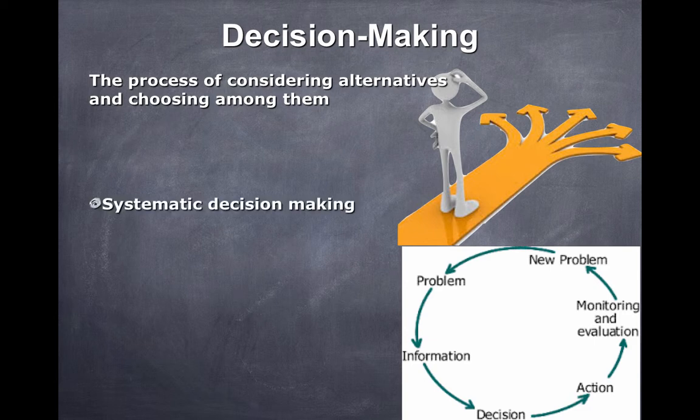The first would be called systematic decision-making. And on the bottom right-hand corner, you see an image of a circular process. You have a new problem. And then you have a problem, you have information that you gain. You make a decision. You see what the action from that decision is. You evaluate and monitor how you're doing with that action. And you continue that process. That's systematic. That's steps.